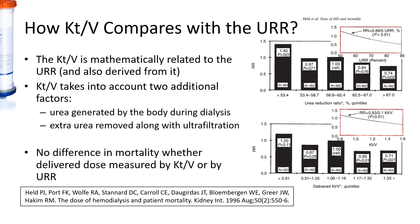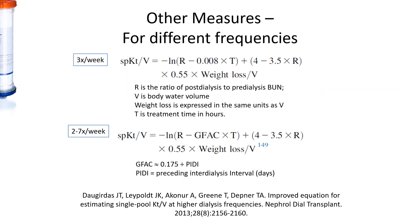In clinical use, how does KT/V compare with the urea reduction ratio? Both are mathematically related to each other, and in fact KT/V can be calculated from URR. If you use the Daugirdas formula, the KT/V can take into account additional factors such as urea generation during dialysis and extra removal along with ultrafiltration. But studies have shown that there is no difference in mortality whether or not you target delivered dose by KT/V or by urea reduction ratio. For the sake of completeness, if you carry out dialysis in different frequencies between two to seven times a week, you may wish to use this formula that is shown here.